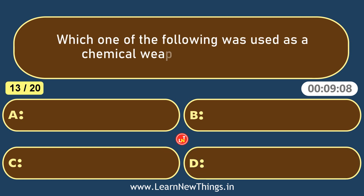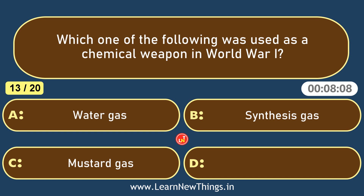Which one of the following was used as a chemical weapon in World War One? Mustard gas.